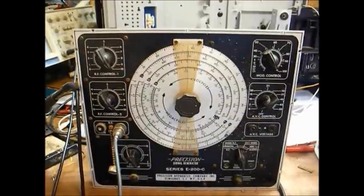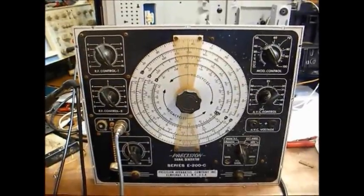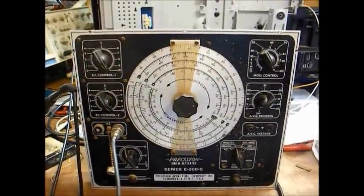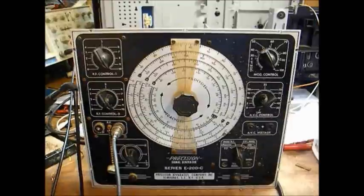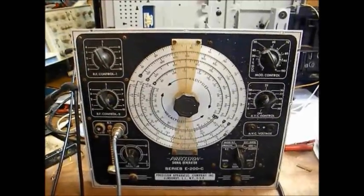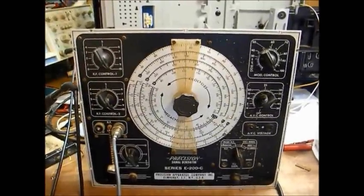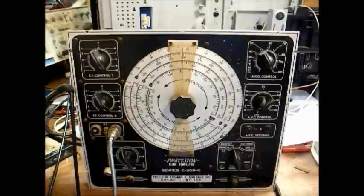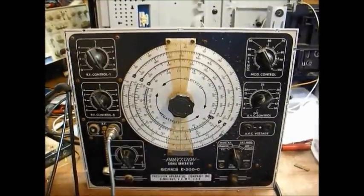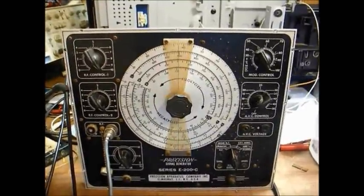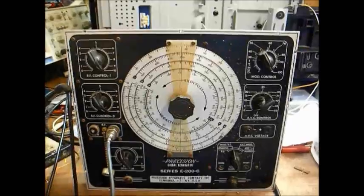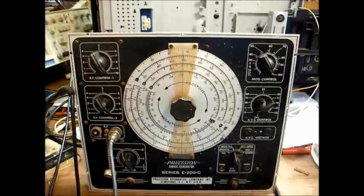Sometime in the mid-60s, B&K bought out Precision, and shortly thereafter they introduced the Model E200D signal generator that was a solid-state version of this one. Although it looked a lot different, the concept is still the same.